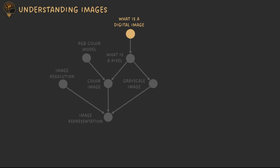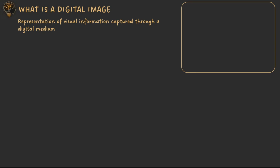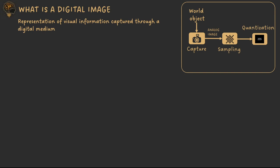A digital image is basically a representation of visual information acquired from the real world through a digital medium such as a camera or any other device. We have a world object, we capture it using our device, and we get an analog image. After that we perform sampling and then quantize the output of the sampling operation to get a digital image.